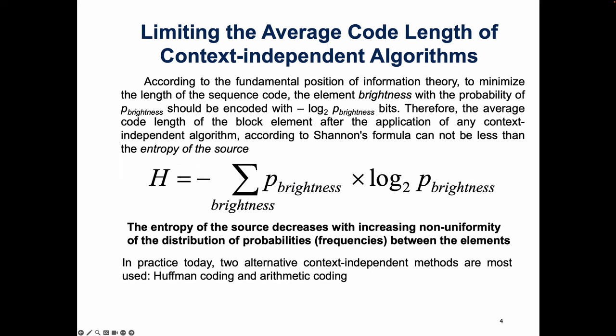According to the fundamental position of information theory, to minimize the length of the sequence code, the element with a probability of p should be encoded with log(1/p) bits. Therefore, the average code length of the block element after the application of any context-independent algorithm, according to Shannon's formula, cannot be less than the entropy of the source.